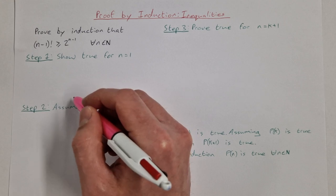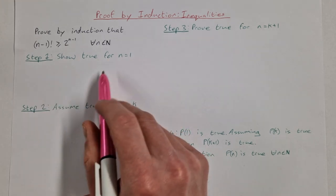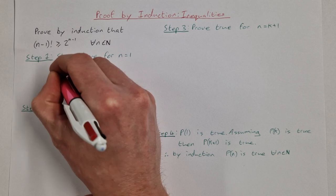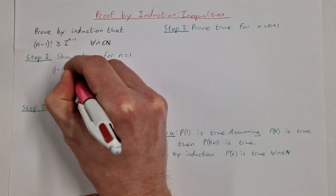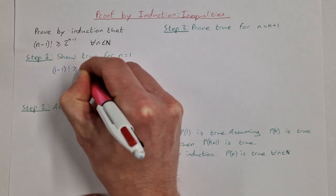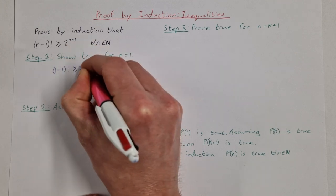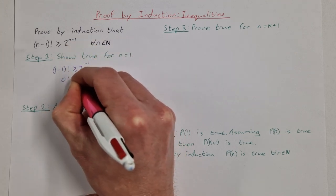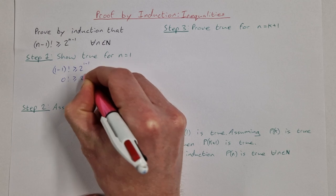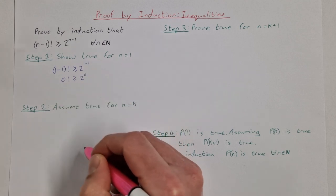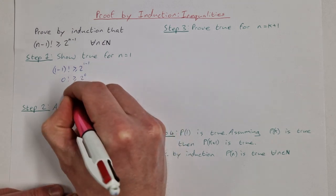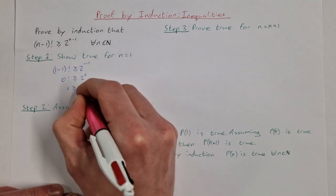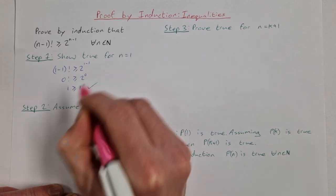Step 1: show true for n = 1. That would be (1-1)! ≥ 2^(1-1), so 0! ≥ 2^0. Hopefully you know that 0! = 1 and 2^0 = 1, so 1 ≥ 1. That is true.